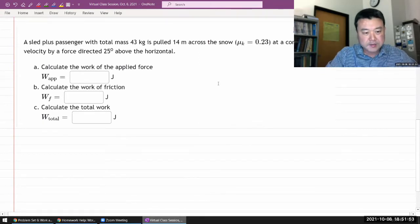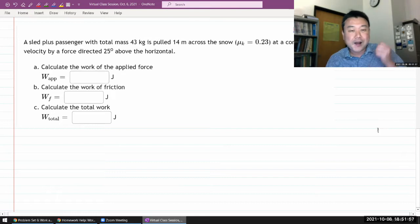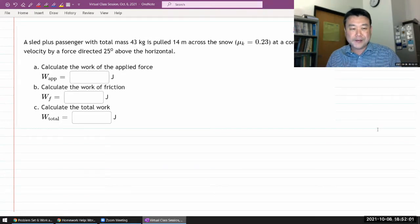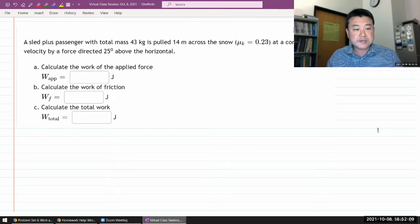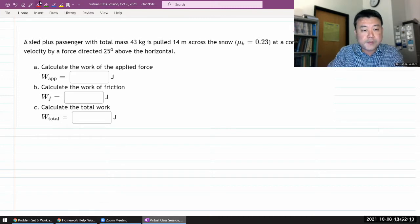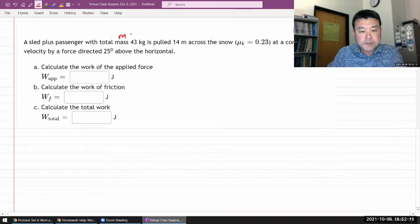Let me do this as a kind of review, recap, or an argument why you shouldn't forget standard strategy problem solving even now when we are starting to introduce additional tools for your problem solving toolbox. In this question they say a sled plus a passenger has some total mass, let me just call that m, is pulled some distance delta x across the snow.